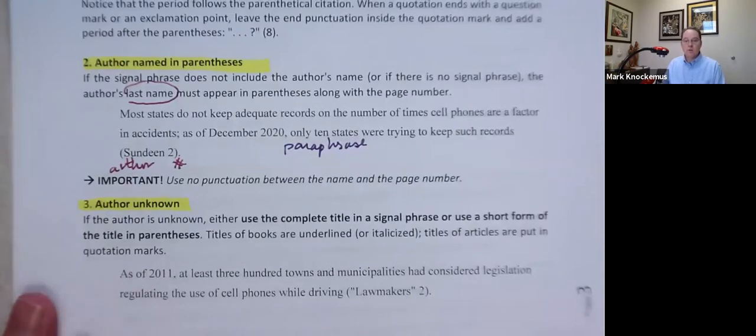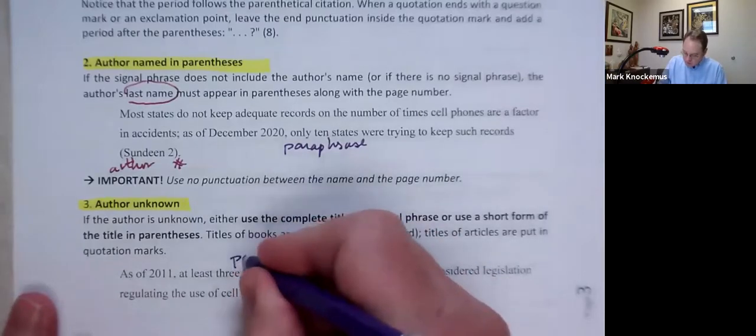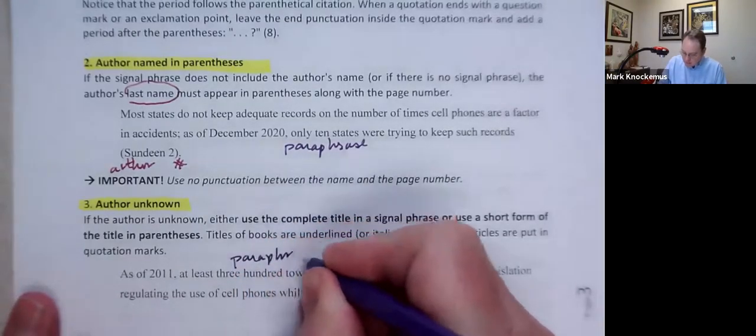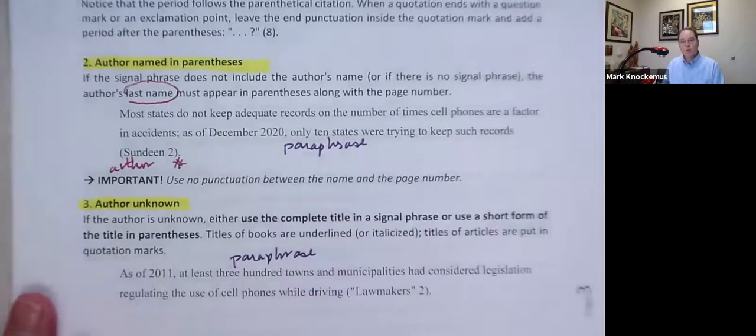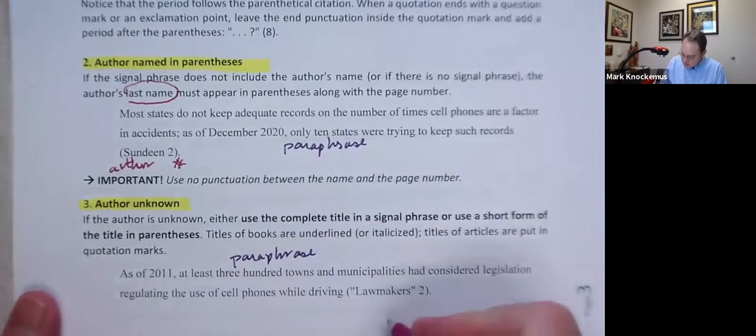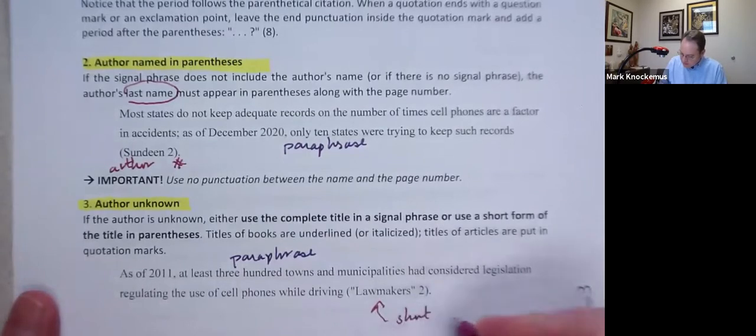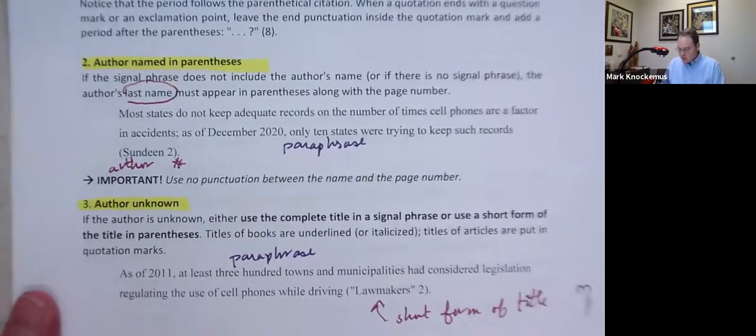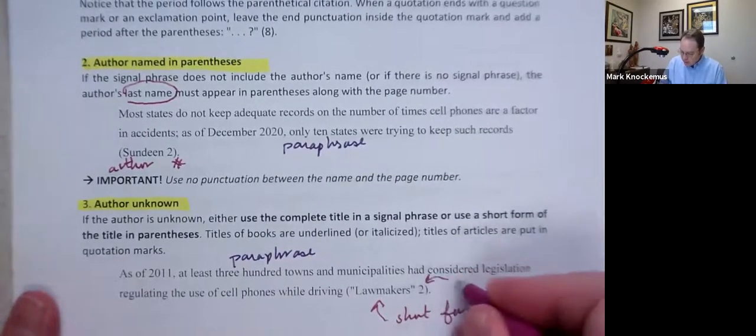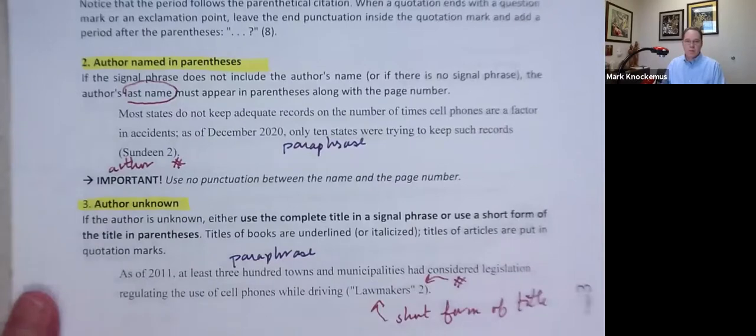at least 300 towns and municipalities had considered legislation regulating the use of cell phones while driving. There's no quotation marks. So what is that again? That's a paraphrase. We have to give credit for paraphrases. What is this? This is not the author. What's that? That is short form of the title of the article and then the page number. So far, so good.